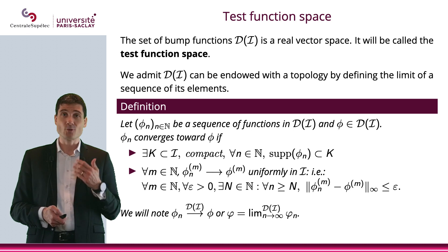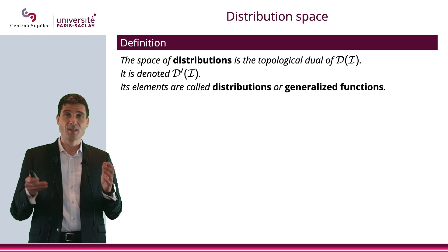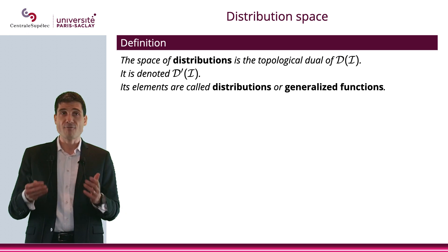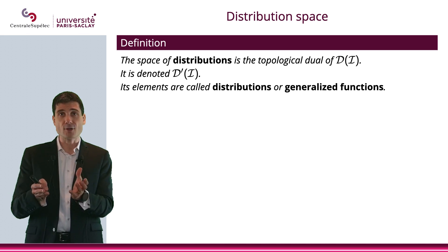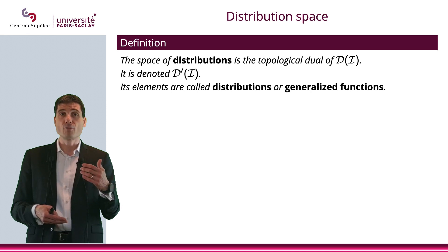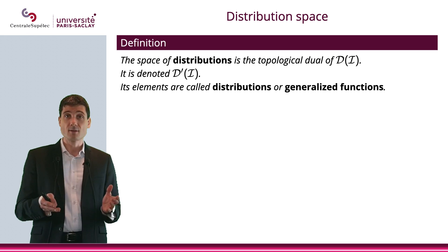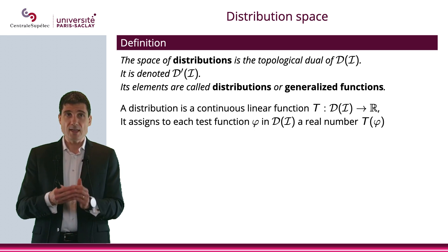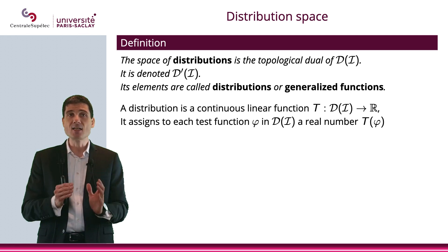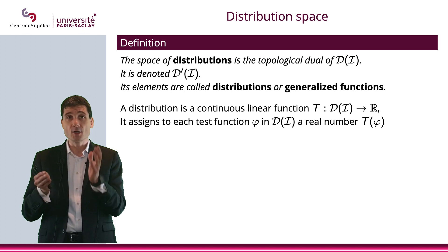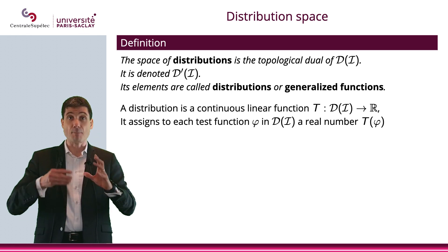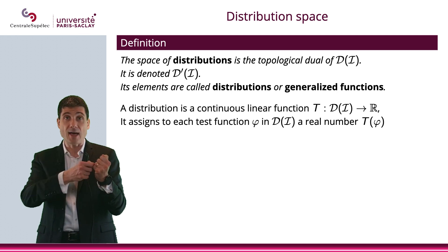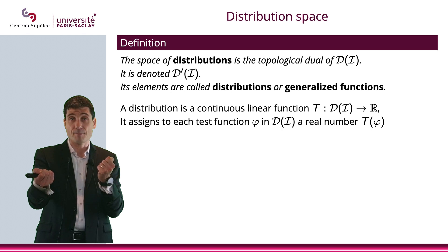Now it's time to define what is a distribution. The set of distributions will be the topological dual of the test function space. So D was the test function space, while the topological dual will be denoted D'. Its elements will be called distributions or generalized functions. The topological dual is the set of all continuous and linear functions that go from that space to ℝ — so the space of distributions is basically the set of all linear and continuous functions T that take a test function φ and return a real number.